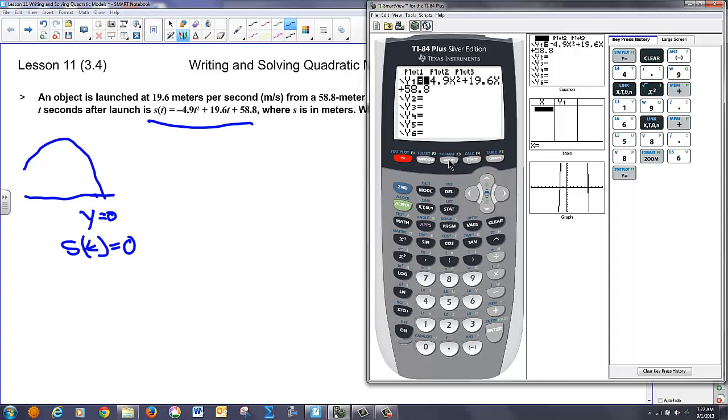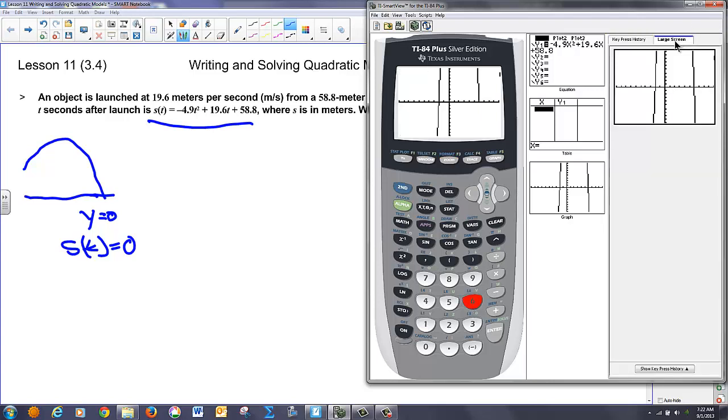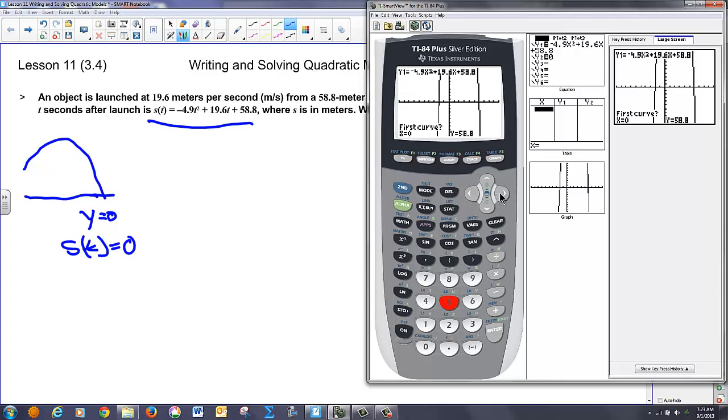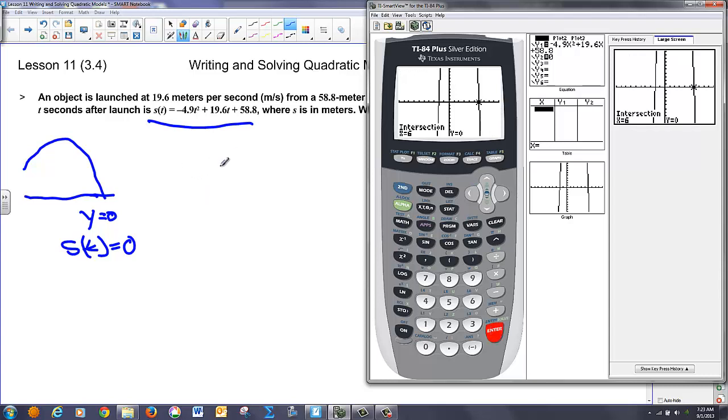And if we take and now graph this in the standard window so I'll hit zoom 6 to be standard, you'll notice that upon graphing I can see that the high point is up here and it's going to hit the ground right in this area here. Now if I want to find out where that is I can find out where it intersects the line y equals zero so I'm going to go back and graph y equals zero as well and then I'm going to calculate an intersection. So I'll go second calculate and hit 5 for intersect and then use my cursor to get the blinky guy down by my intersection which is somewhere close to this point here. So I enter 3 times.